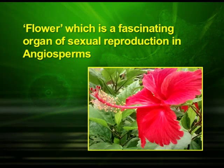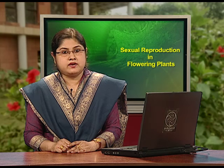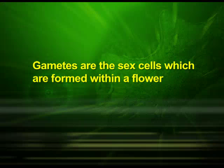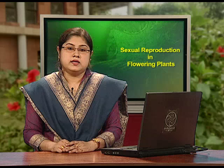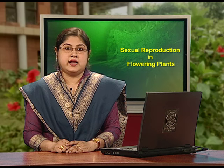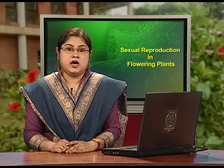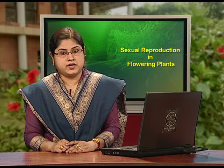First we will discuss about flower, which is a fascinating organ of sexual reproduction in angiosperms. The process of producing new individuals by the fusion of male and female gametes is called sexual reproduction. It is supposed to be an advanced stage in the life history of a plant. Gametes are the sex cells which are formed within a flower. The myriads of flowers that we enjoy gazing at, the scents and the perfumes that we swoon over, the rich colors that attract us are all there as an aid to sexual reproduction.